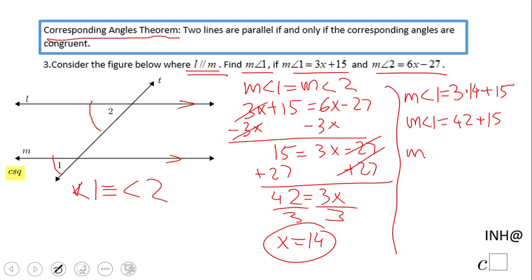And that means measure of angle 1 is 57 degrees. So angle 1 is 57.